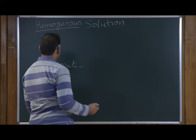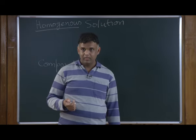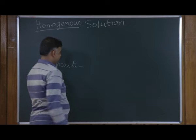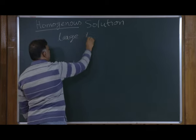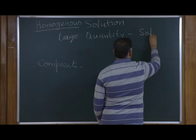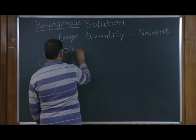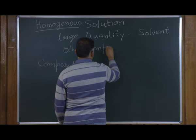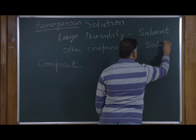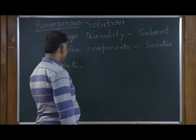Let us first define what is a solution. There is solute present and there is solvent present. The component which is present in large quantity — present in excess — is called solvent, and other components are called solute. There could be more than one component in smaller quantity; they will be called solute.